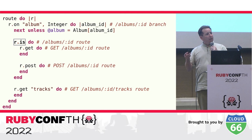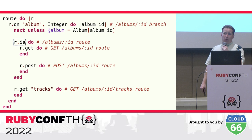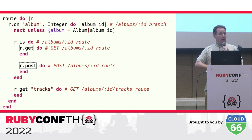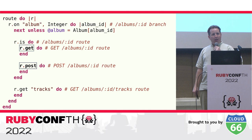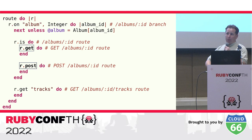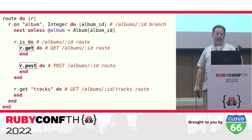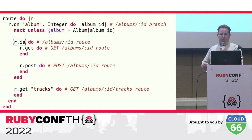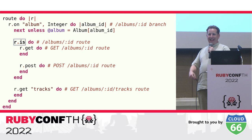If we find a matching album, routing continues. The next method called is r.is with no arguments, which will only match if the request path has already been completely consumed — so this will match for requests like '/albums/1' but not '/albums/1/tracks'. Assuming the path was fully consumed, the block passed to r.is will be called. Inside this block we have calls to r.get and r.post: r.get yields if the request method is GET, and r.post yields if the request method is POST.